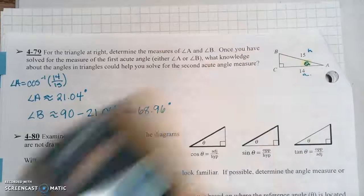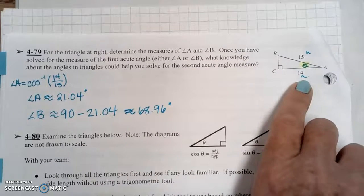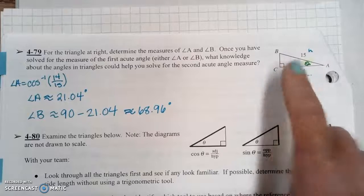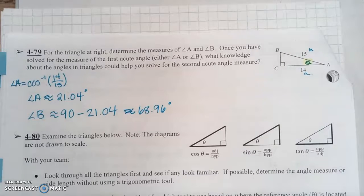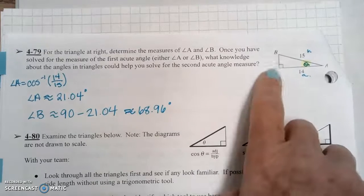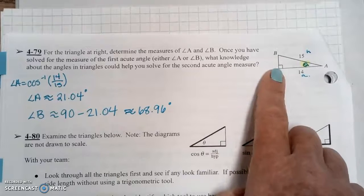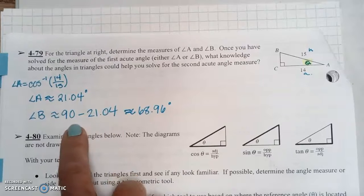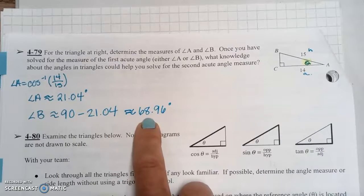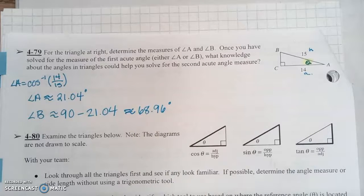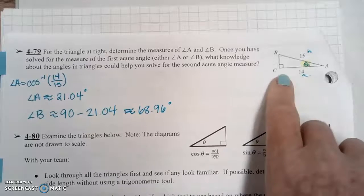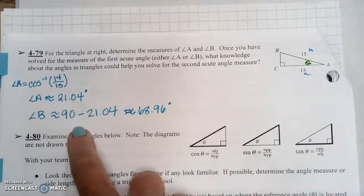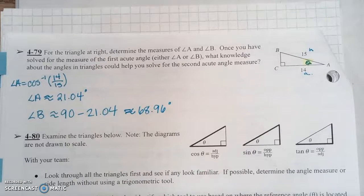Now, to solve for angle B, we could do the same thing, except we would have opposite and hypotenuse. So you could use another trig function to solve. Or because it's a triangle, and you know this angle is already 90, you could simply subtract the 21.04 that you just found out from the 90. And that would tell you that angle B is 68.96. You know two of the three angles in a triangle, you can subtract them from 180. Or in this case, because you already know that was 90, you can subtract it from 90.